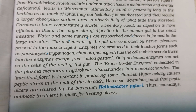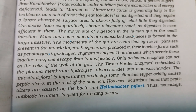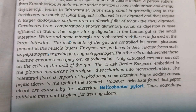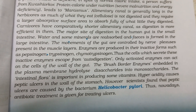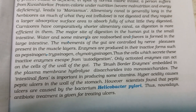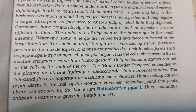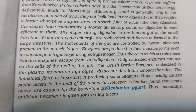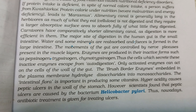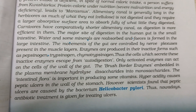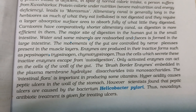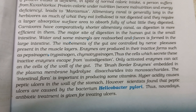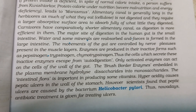Hyperacidity causes peptic ulcers in the wall of the stomach. HCl is an acid released in our stomach that kills germs. If we don't take food on time, HCl is still released and we can develop peptic ulcers.